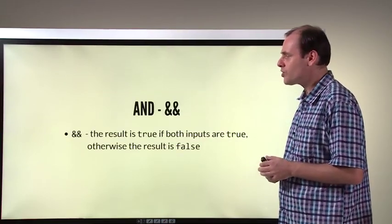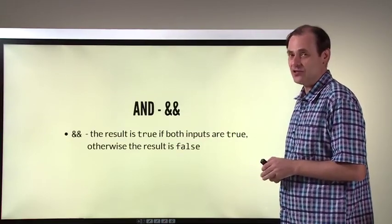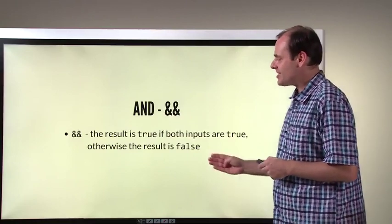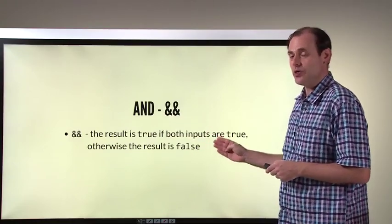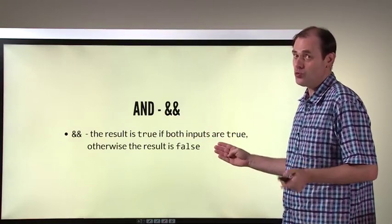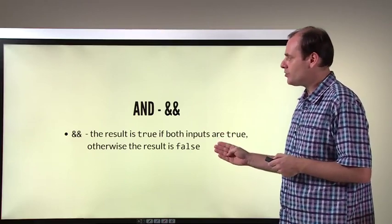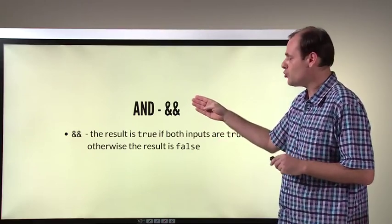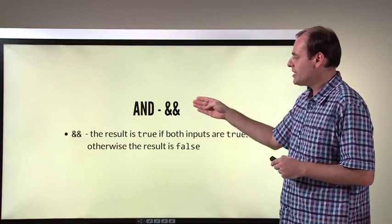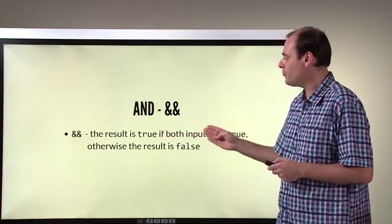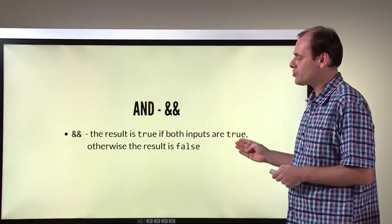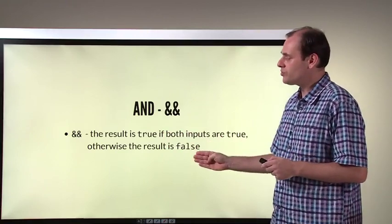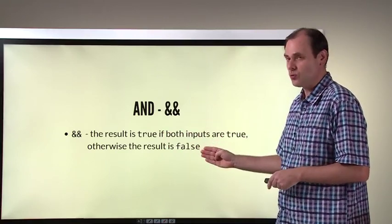Let's go through them. First one: AND, logical AND. You're going to test two inputs — two inputs that are true or false. The result, if you do logical AND checking those two inputs, is true if both of the inputs are true. Otherwise, the result of logical AND is false.